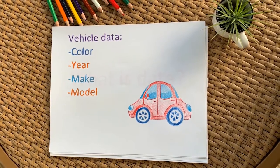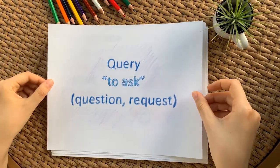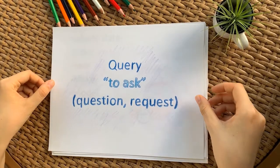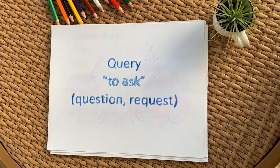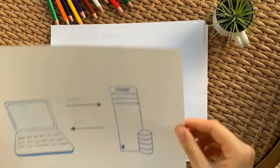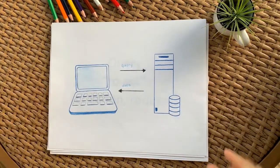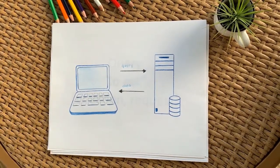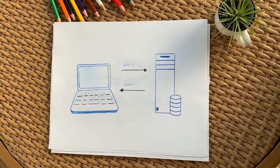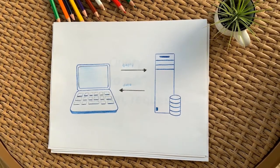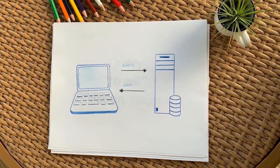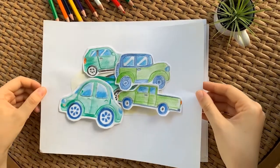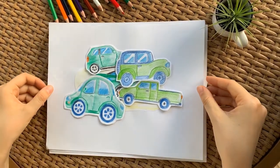This is where queries come into play. A query is basically a question you ask the database if you want to find something. For example, my car is a green 2014 Toyota RAV4. If I wanted to find my car in a database, I could use some or all of that information to ask the question: can you give me any vehicle with a green color and made in 2014? The database would give me a list of all the cars that match that information.